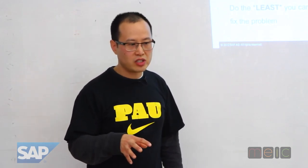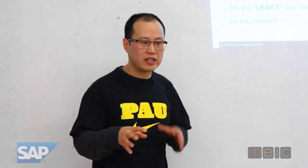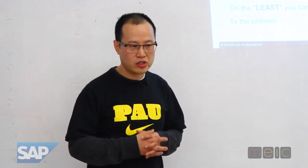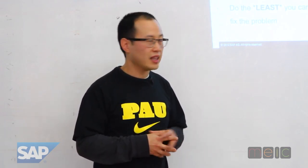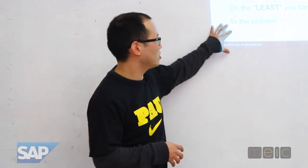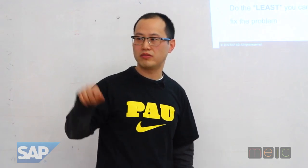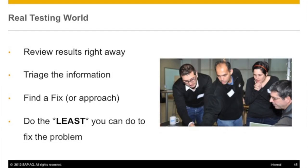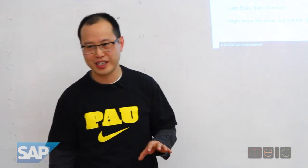You want to sort of triage the information. You want to find a fixer approach that you're going to do. This is the most important one — in that curve where we're in the building phase now, you want to do the least you can do to fix the problem. It might sound counterintuitive, especially if we have any Type A personalities here who want perfection.